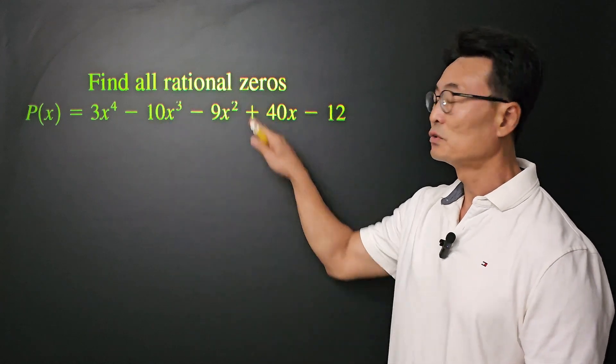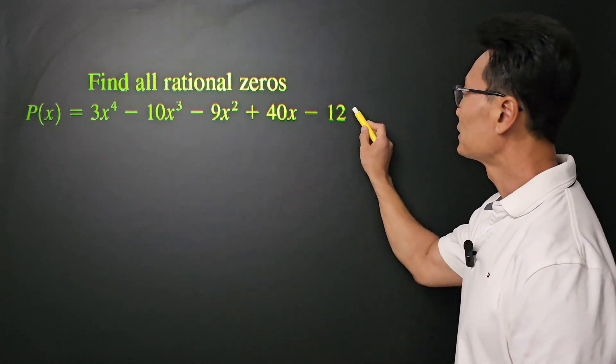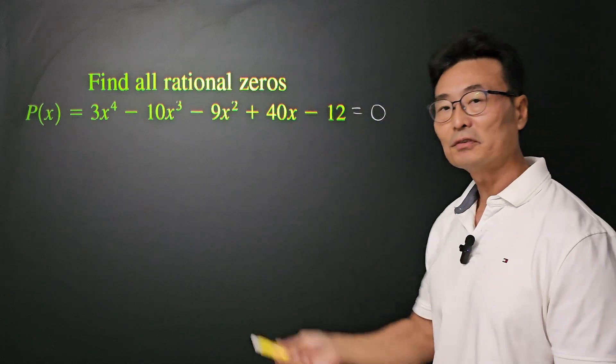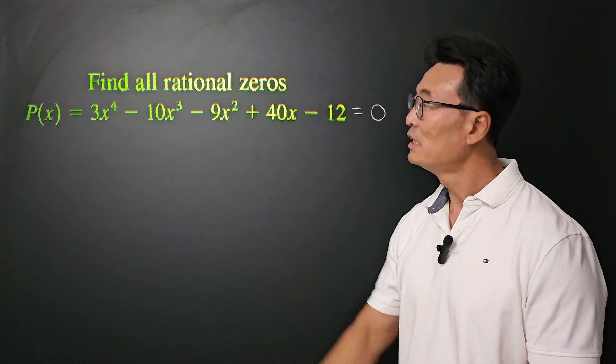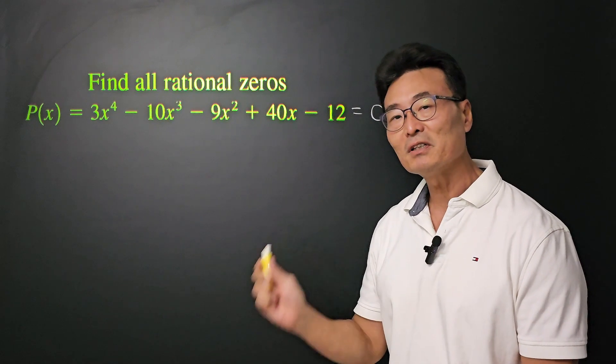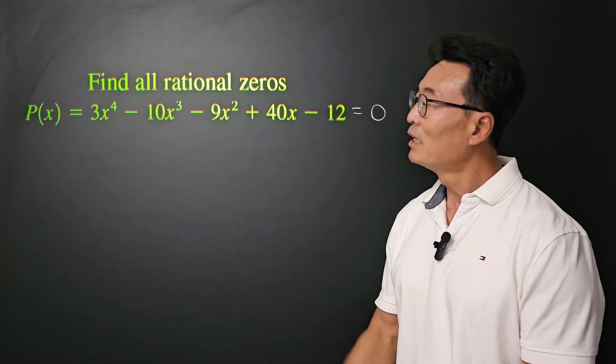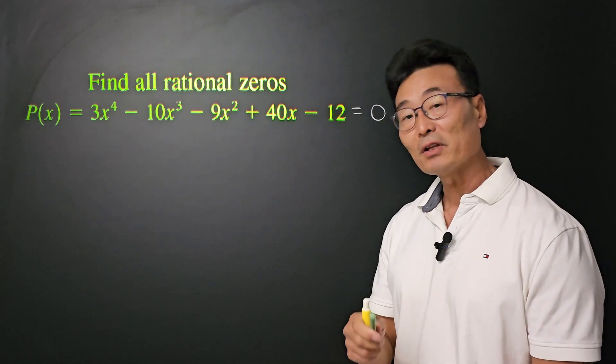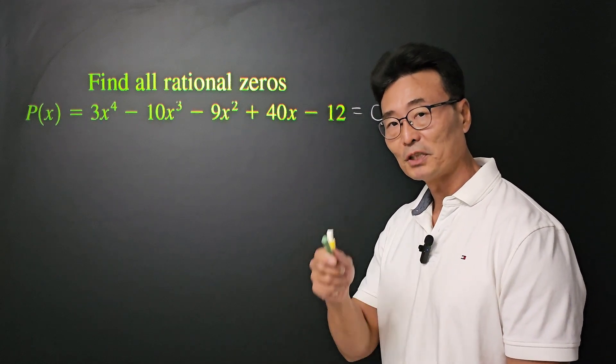When we're asked to find all rational zeros, all it means is take the function, set it equal to zero, and solve for x. That's all it means. Only thing is, when we have an equation or a function of degree 4, it could be a little intimidating when we're looking for the zeros, but with a little time and patience, we could do it. Here we go.